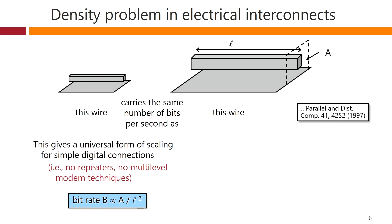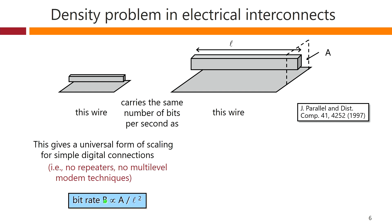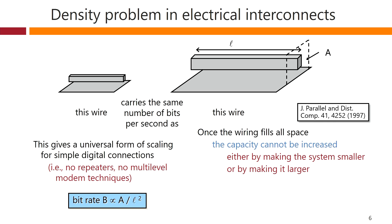We can sum it up in a simple formula: the bit rate that we can get down a system of wiring is proportional to the total cross-sectional area of the wiring divided by the square of the length of the wiring. The pre-factor is of the order of 10^15 or even 10^16 bits per second, but it soon causes problems. We see this limitation all the time in integrated circuits, in boards, in cabinets, and in wiring between cabinets. Once the wiring fills all space, the capacity can't be increased, either by making the system smaller or by making it larger. For once, miniaturisation does not help us.